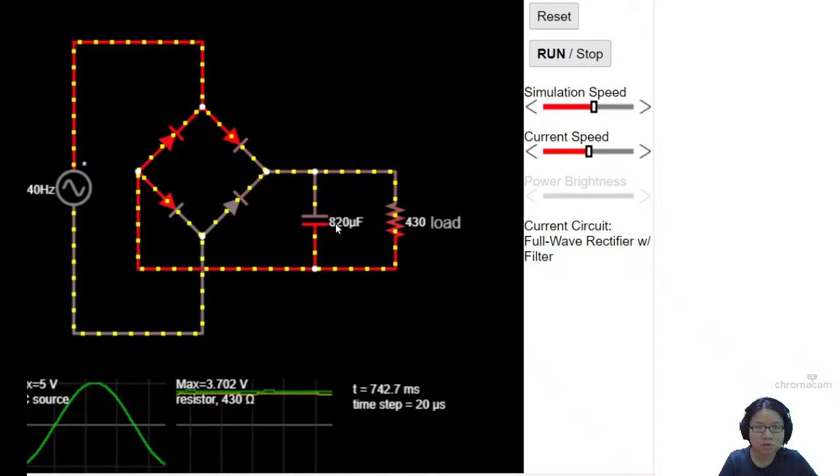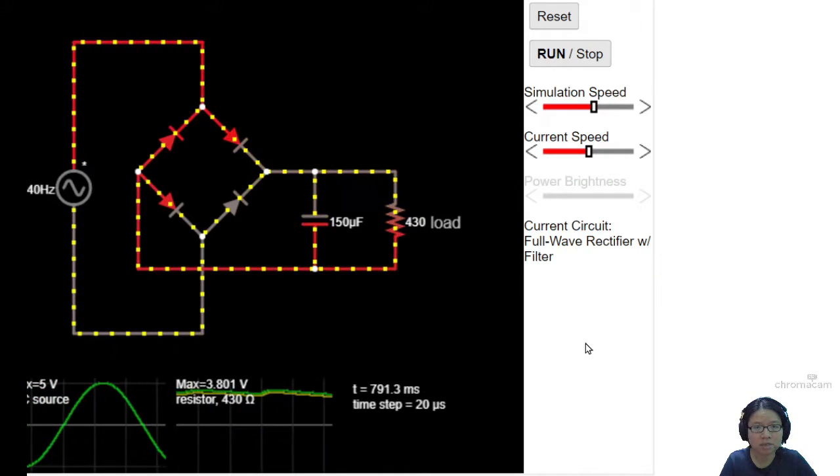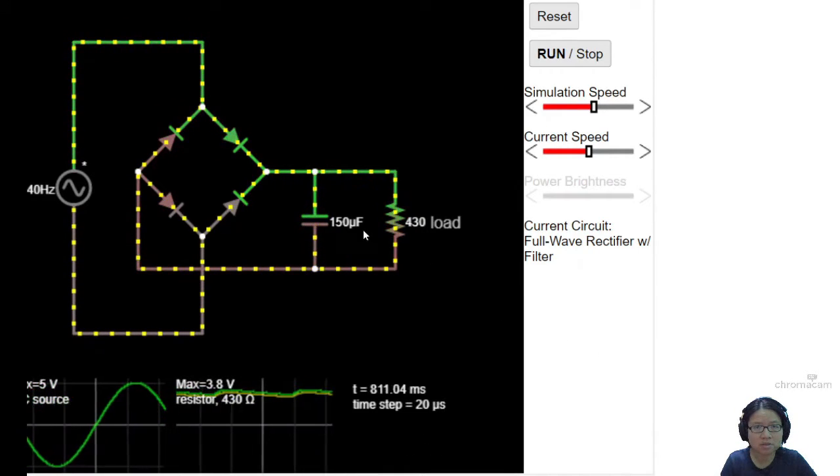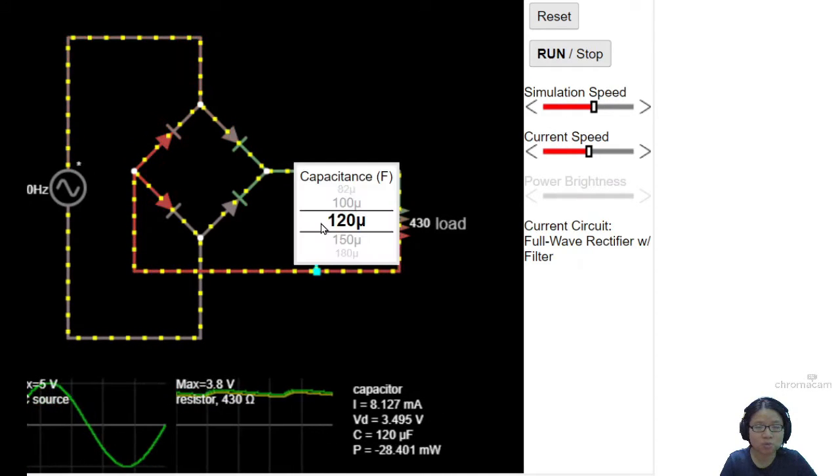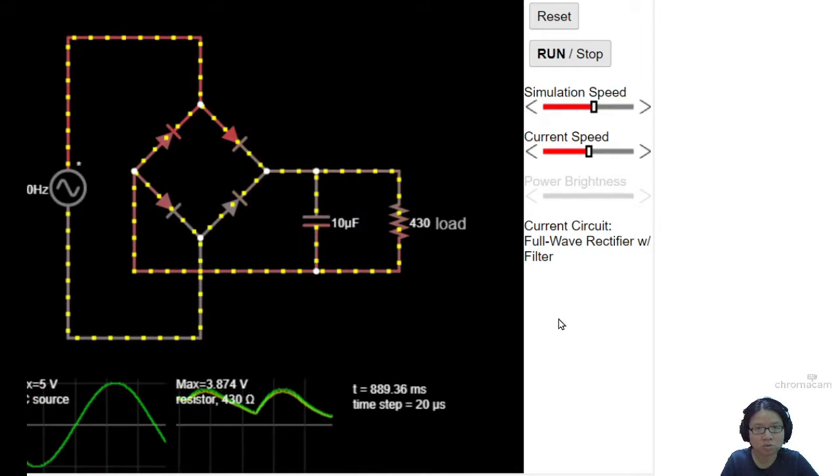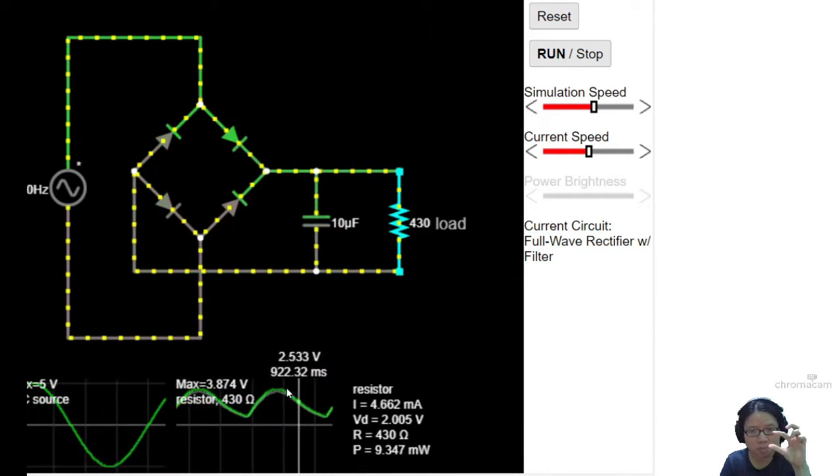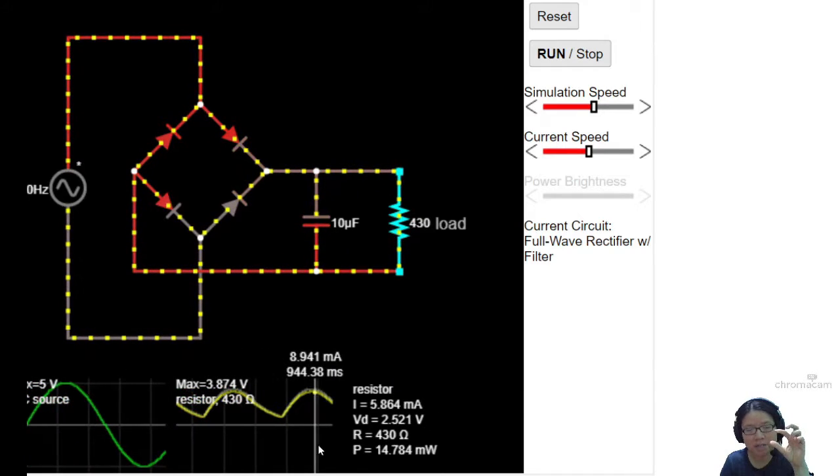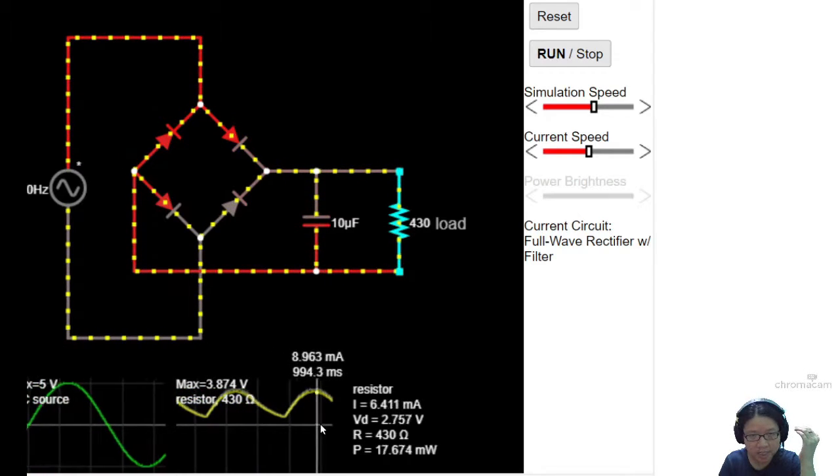So when you change the value of this capacitance, you will change the ripples. And for this one to be detectable, I need this one to be quite smaller, maybe I don't know, 10. So you can see this one will drop a lot. So the size of the ripple, maximum to minimum, depends on this. And observe the shape, this part here, the discharging cycle is a curve.